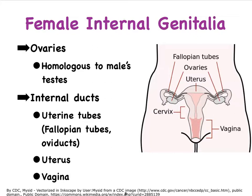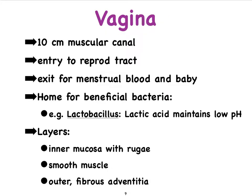The uterus is connected to the vagina. The vagina is a pretty muscular canal and it has multiple functions. It doesn't just function as the birth canal, but it also is the canal through which the menses leave the body. And it also is the canal of the female into which the penis is inserted so that copulation can occur. It houses several beneficial bacteria,